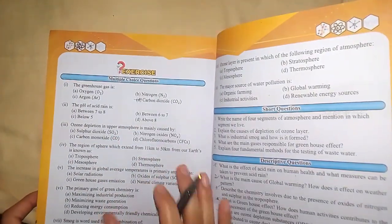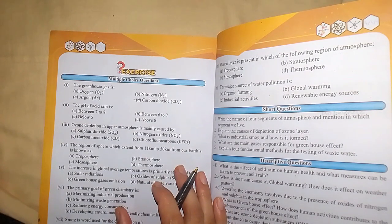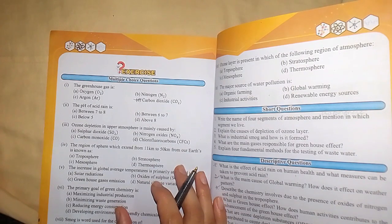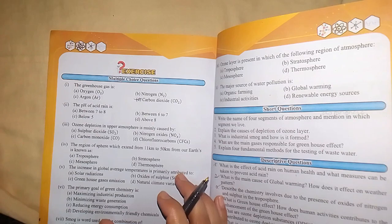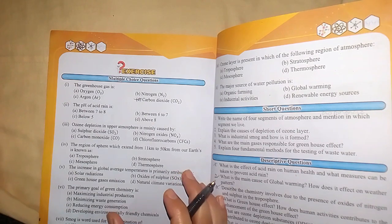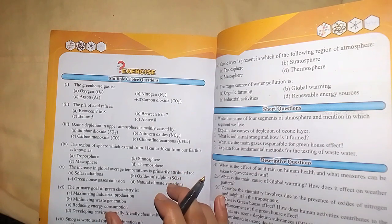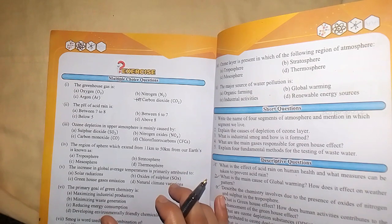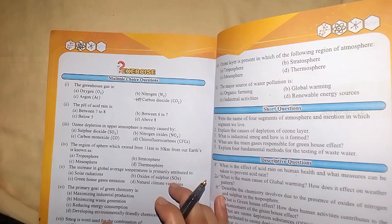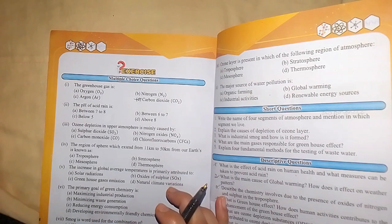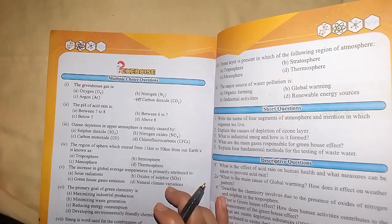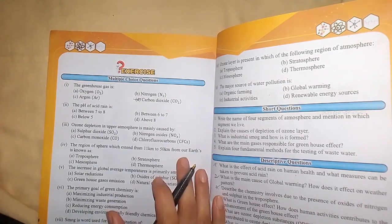MCQ number 2: The pH of acid rain. Acid rain contains compounds like nitric acid, sulfuric acid, and carbonic acid. The normal pH is between 6 to 6.5, but acid rain pH is below 5 depending on the concentration of acidic compounds. The correct option is C, which is below 5.